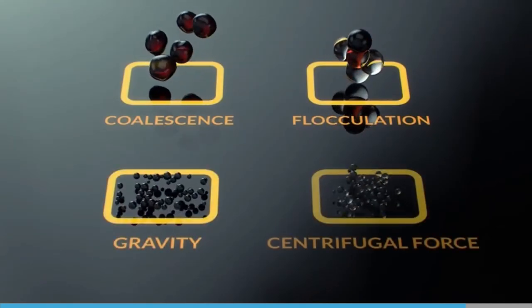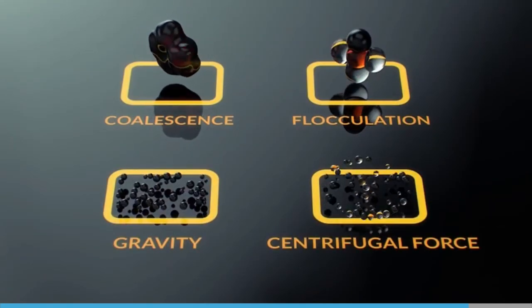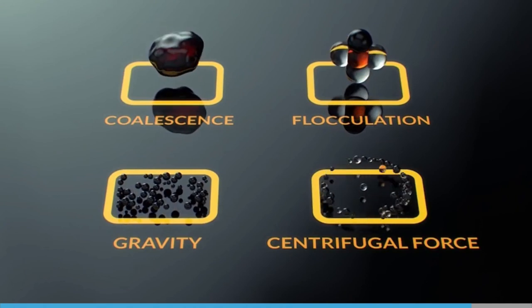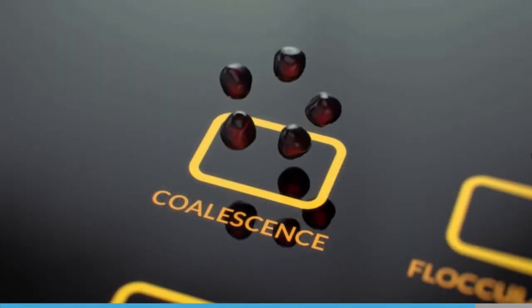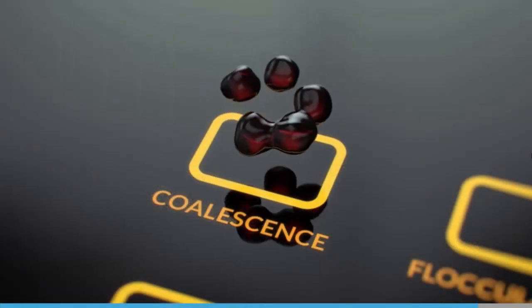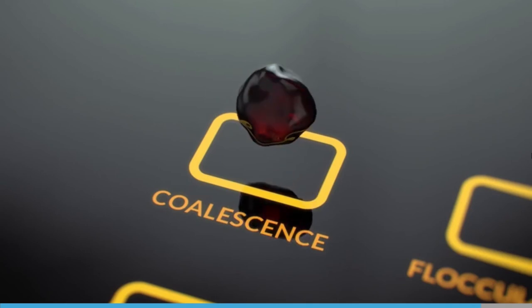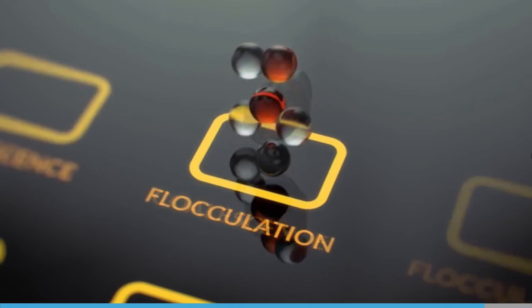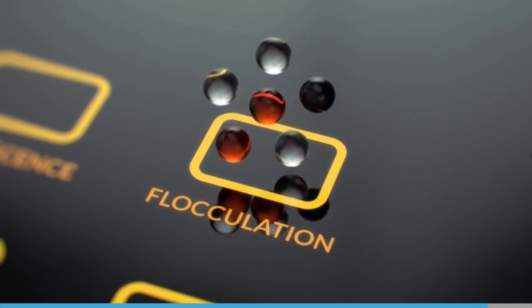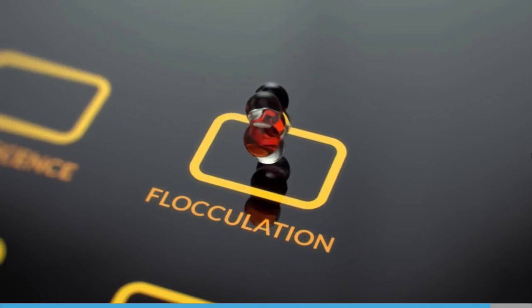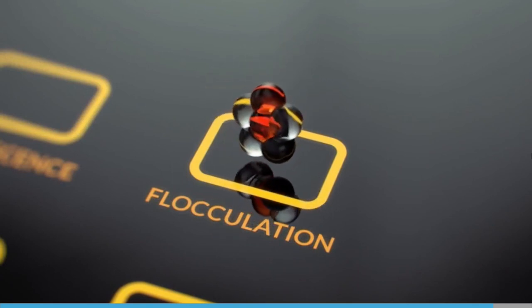Most types of separators use many of the same physical processes. Coalescence is when several small oil droplets come together and form one larger droplet. Flocculation is when two or more particles aggregate, stick together, without losing their individual boundaries.